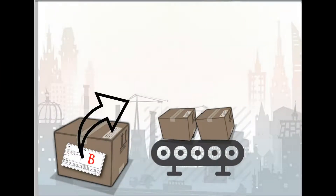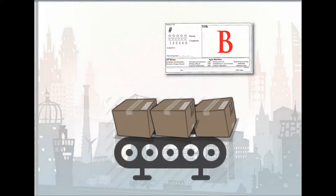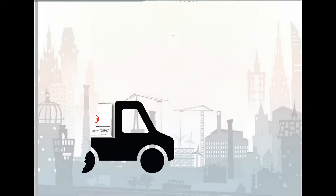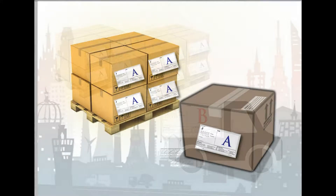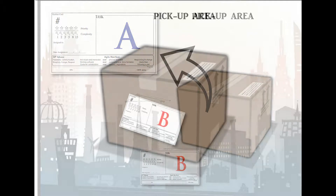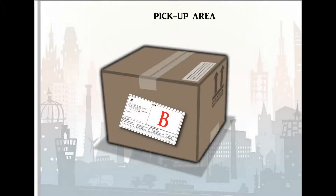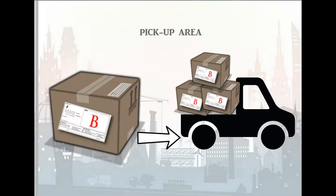On the other hand, at the assembly factory, the operator would remove the Parts Retrieval Kanban B when he uses the parts. This Kanban is transported to the parts pickup area to retrieve replacement parts. When the operator retrieves the parts at the pickup area, the Production Instruction Kanban A is replaced with Parts Retrieval Kanban B. The parts displaying the Parts Retrieval Kanban are now brought back to the assembly area.